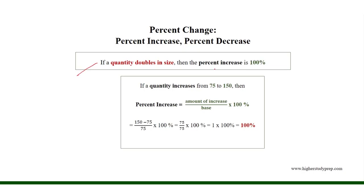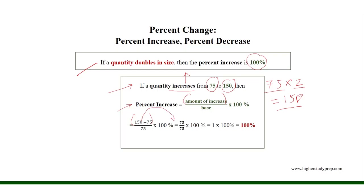If a quantity doubles in size, then the percent increase is 100%. For example, if a quantity increases from 75 to 150 — where 75 times 2 equals 150, because the quantity 75 doubles to become 150 — then the amount of increase equals 150 minus 75, which is 75, and the base or initial amount is 75. So the percent increase equals 75 over 75 times 100%, which results in 100%.